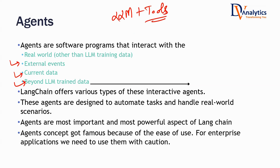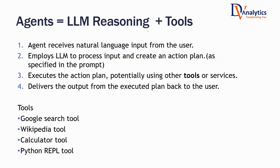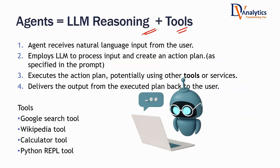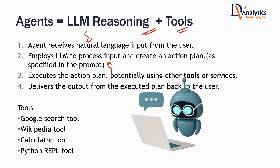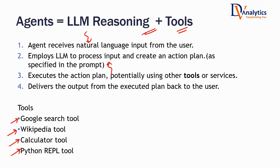An AI agent uses LLM for reasoning, plus we give it tools — tools are the ones that add the magic. The user inputs a prompt, the AI agent creates an action plan, uses tools to execute that plan, and produces the final output. AI agents are LLM reasoning plus tools. Examples of tools include a Google Search tool, a Wikipedia tool, a calculator tool for mathematics, and a Python REPL tool to run Python code.